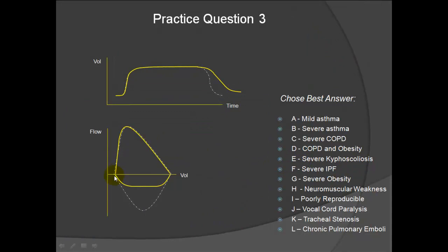Practice question 3: No values are shown, just the flow volume loop and spirogram. The normal curves are shown in white. The expiratory phase is completely normal, but on inspiration there is a flow cutoff where there is a maximum flow and a squaring of the inspiratory flow. On the spirogram, the flow reaches a maximum peak and then stays constant with a straight line of volume versus time, signifying unchanging flow. An illness that causes inspiratory cutoff of flow is consistent with upper airway obstruction, and the best answer is vocal cord paralysis.